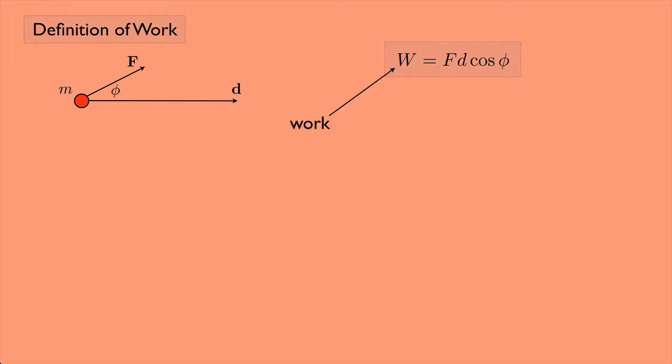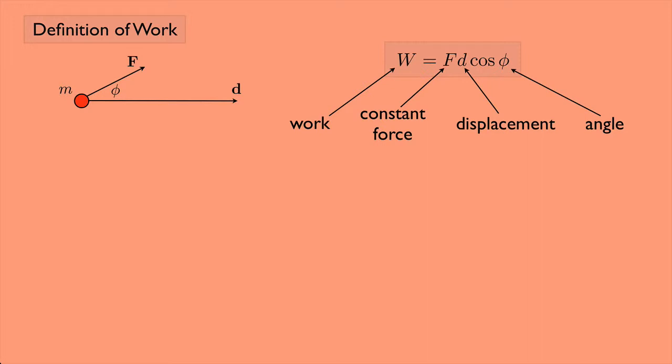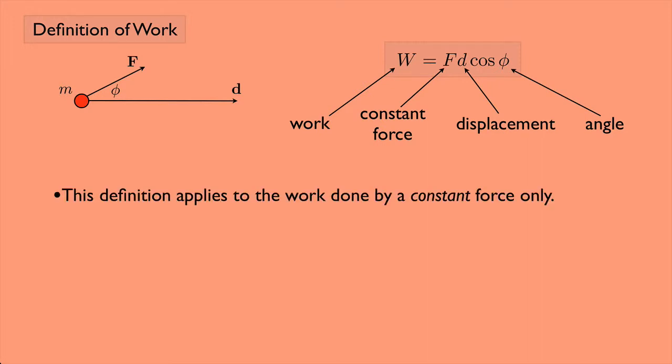W here is the work. F is a constant force — we're going to assume for now that our force is constant. Later on we'll worry about what happens when the force is not constant. D is the magnitude of the displacement, and phi is the angle between the force vector and the displacement vector when they're placed so their tails coincide. This definition applies to the work done by a constant force only.